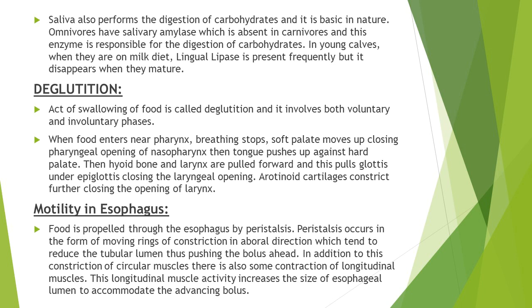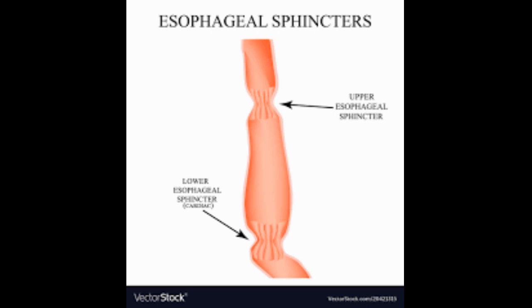When deglutition is not taking place, the body of the esophagus is relaxed but the upper and lower sphincters remain constantly constricted, in order to prevent accidental entry of food from the stomach into the esophagus or air from the mouth into the esophagus. So both sphincters remain tightly constricted when the deglutition process is not taking place.